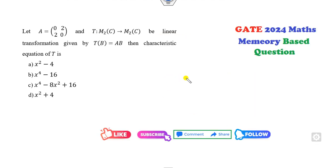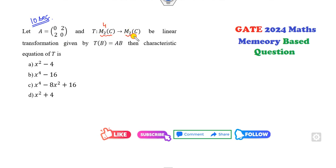If you are a regular watcher of my YouTube videos then you can solve this question within a 10-second time period. How can you solve this in 10 seconds? What is the dimension of this? 4. What is the dimension of this? 4. So that means the matrix T is my 4×4.